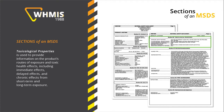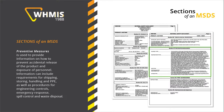The Preventive Measures section is used to provide information on how to prevent accidental release of the product and exposure of personnel. Information can include requirements for shipping, storing, handling, and PPE, as well as procedures for engineering controls, emergency response, spill control, and waste disposal.